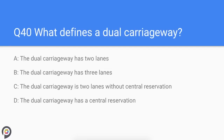Question forty: what defines a dual carriageway? A road defined as a dual carriageway is a road that has a central reservation — a metal barrier or a strip of land separating you from oncoming traffic. A dual carriageway is not defined by how many lanes there are; you can have one, two, three, or even four lanes. Do not confuse two-lane roads as dual carriageways — if it doesn't have a central reservation, it is a single carriageway road.